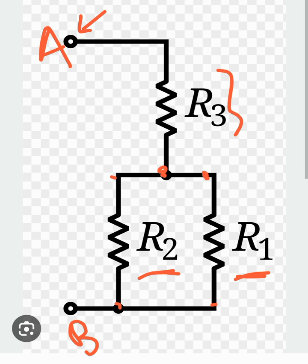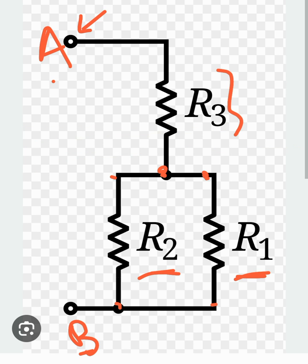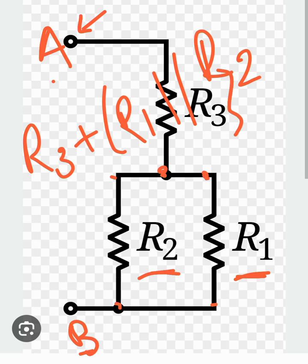Therefore, the equivalent resistance of this network when you look across points A and B can be written as R3 plus R1 in parallel with R2.